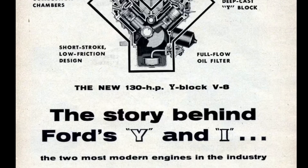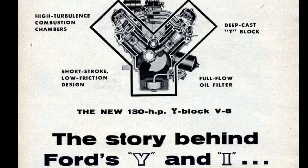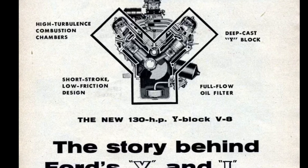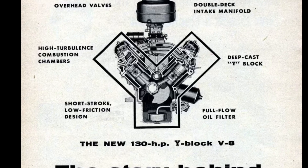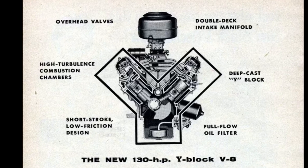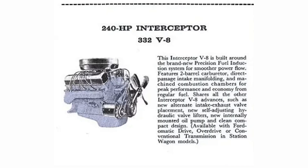The year is 1958. Ford already has a V8 called the Y-Block, which was introduced just four years prior in 1954. But Ford knows that engine has top-end oiling issues. Not only that, but the Y-Block could only get so big. Ford wanted to offer a better engine design with the ability to go larger.